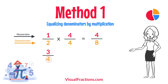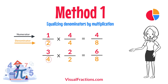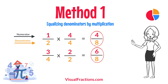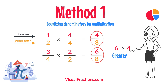For three quarters, multiply both the numerator and the denominator by two — the denominator of one half. This results in six eighths. Now, with both fractions expressed with a denominator of eight, we can easily compare them. Comparing these, six eighths is greater than four eighths, so three quarters is the larger fraction.